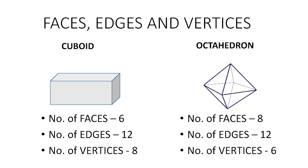On the screen, we have two 3D objects. Let us identify the number of faces, edges, and vertices for each. First, we have a cuboid. It has 6 faces, 12 edges, and 8 vertices. The second figure is an octahedron. It has 8 faces, 12 edges, and 6 vertices.